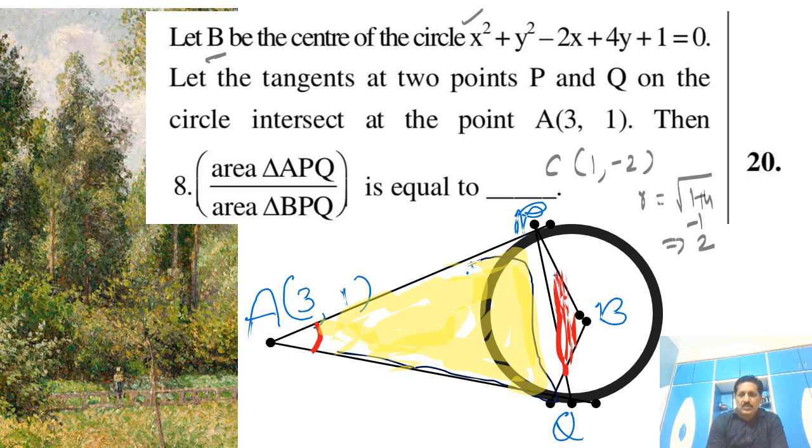So let the tangents at two points P and Q—this is P, this is Q here. Tangent at two points P and Q, so here this is P, this is Q here on the circle intersect at the point A(3, 1). So this is A, 3 comma 1 is given.